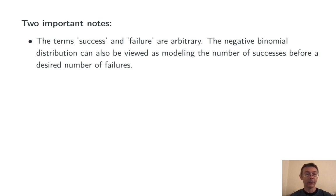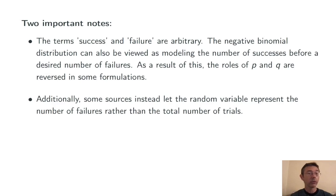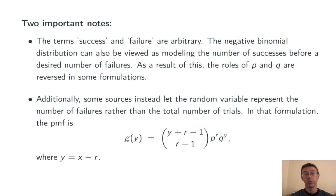Two important comments here. The words success and failure are completely arbitrary, and the negative binomial distribution can also be viewed as modeling the number of successes before a desired number of failures. So sometimes when you're looking at different sources, the roles of p and q are going to be reversed. Additionally, some sources are going to let the random variable instead represent the number of failures rather than the total number of trials. The difference between them is just that you add or subtract r to get from one formulation to the other.